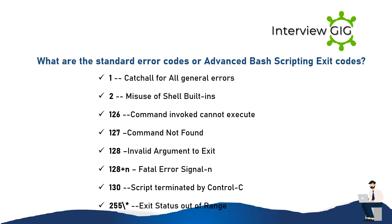What are the standard error codes or advanced bash scripting exit codes? 1: catch-all for general errors. 2: misuse of shell built-ins. 126: command invoked cannot execute. 127: command not found. 128: invalid argument to exit. 128+n: fatal error signal n. 130: script terminated by Control+C. 255: exit status out of range.